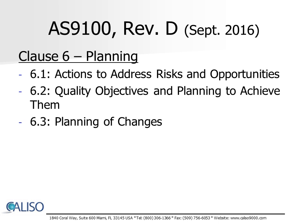Clause 6 discusses the requirement that an organization must address both risks and opportunities when planning for the quality management system. In addition, the organization is required to establish quality objectives, a plan for achieving the quality objectives, and how changes to the quality management system will be managed.